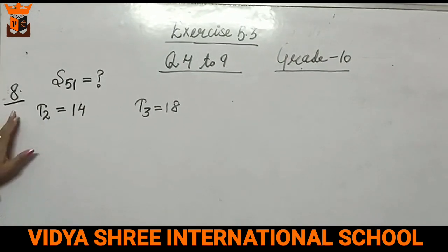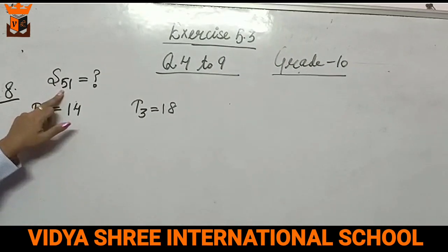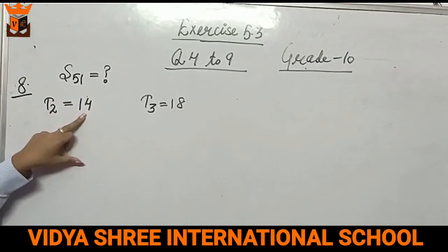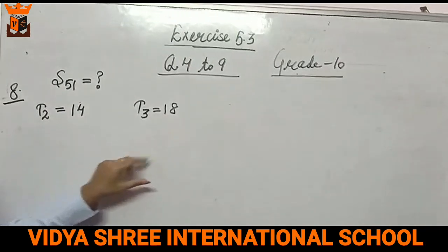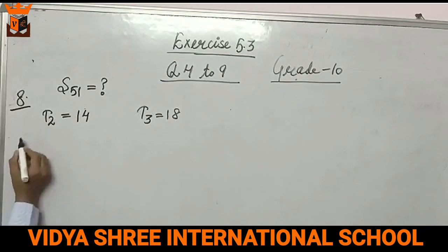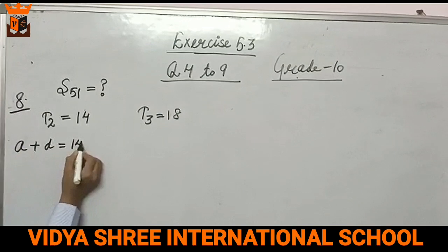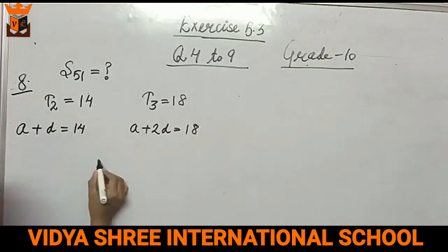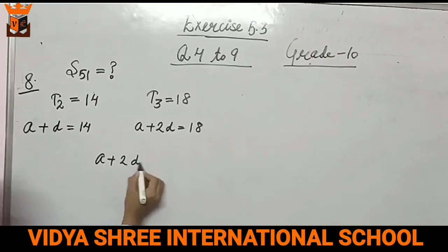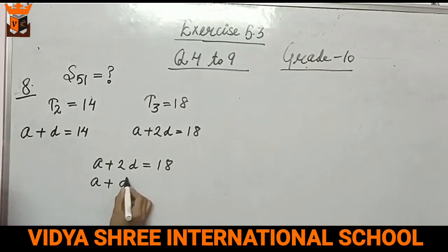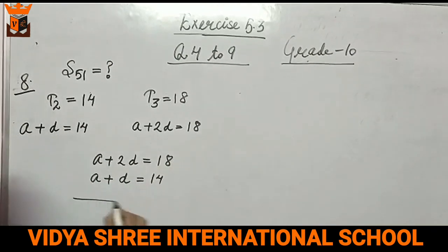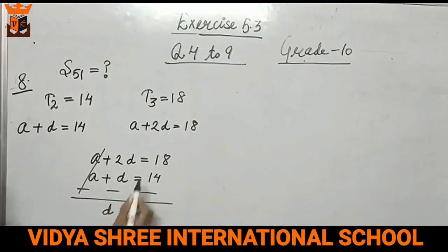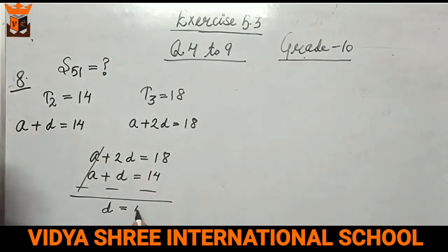Next question, question number 8. You have to find S51, the sum of 51 terms. Second term is given 14. Third term is given 18. So second term T2 is a plus d equals 14. T3, a plus 2d equals 18. We will solve them by elimination method. So a plus d equals 14. Change the sign. a cancels with a. 2d minus d is d. 18 minus 14 is 4.